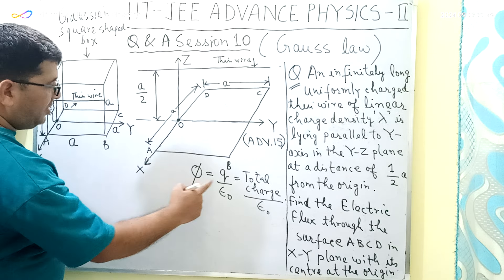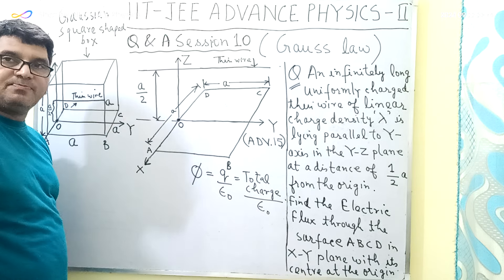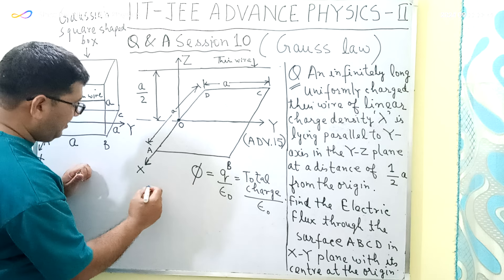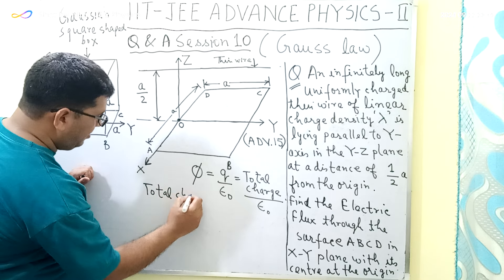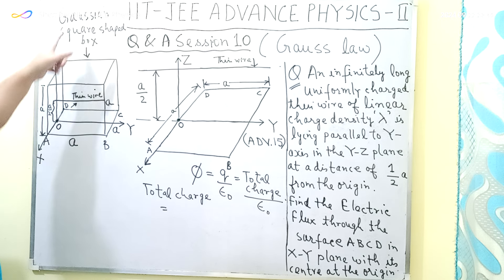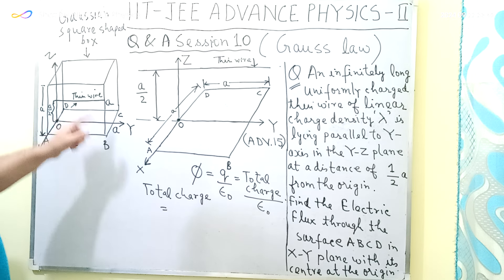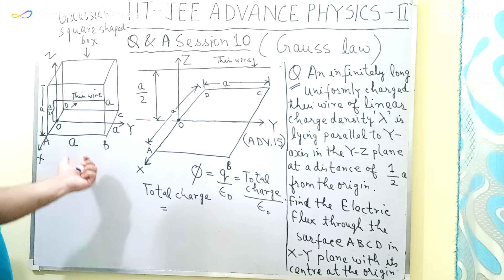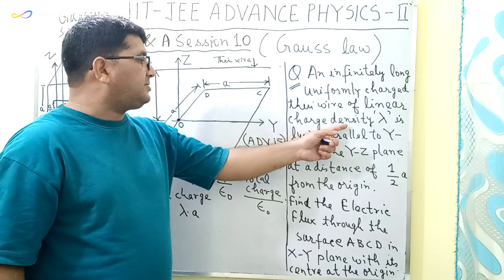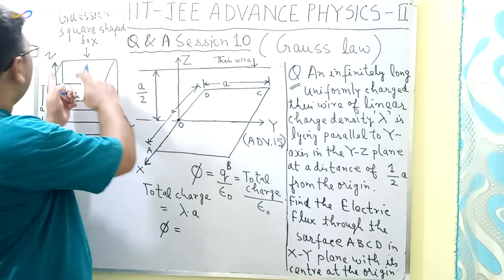The total flux is given by Q upon epsilon naught, which equals the total charge enclosed by the Gaussian surface divided by epsilon naught. The total charge depends on the length of the wire lying inside the square-shaped Gaussian box. Since the length of each side of the box is A, the length of the wire inside is also A, and the total charge enclosed is lambda times A.